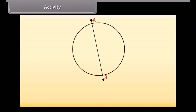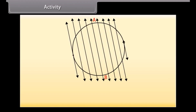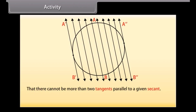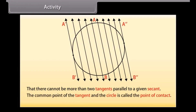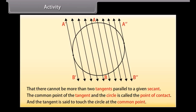Activity. To understand more about tangent, let us do an activity. Draw a circle and a secant AB of the circle. Now, on both sides of this secant, draw various lines parallel to it. We will find that after some steps, the length of the chord cut by the lines will gradually decrease and it becomes zero on both sides of the secant. The positions AB and AB of the secant become tangents to the circle parallel to the given secant AB. We can also observe that there cannot be more than two tangents parallel to a given secant. The common point of the tangent and the circle is called the point of contact, and the tangent is said to touch the circle at the common point.